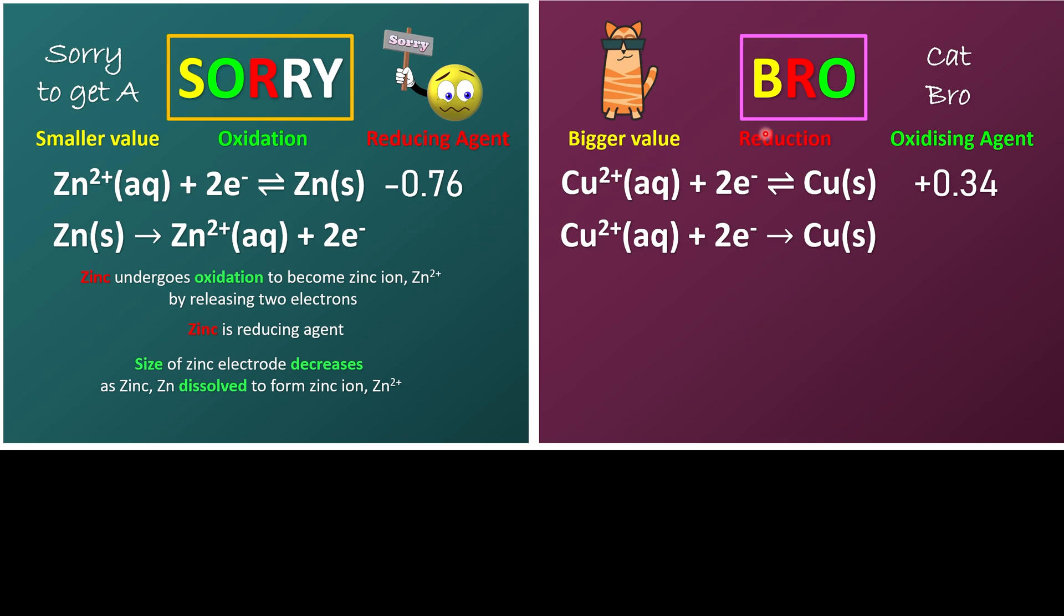Meanwhile, on the other hand, what we have is the copper 2+ ion undergo reduction by receiving two of the electrons to become copper atom or copper metal. So copper 2+ ion is our oxidizing agent.